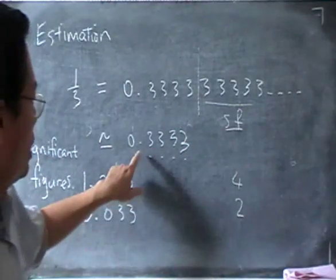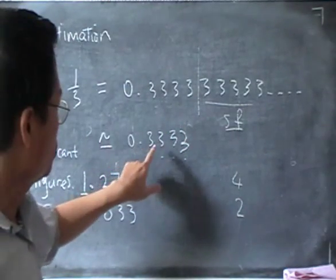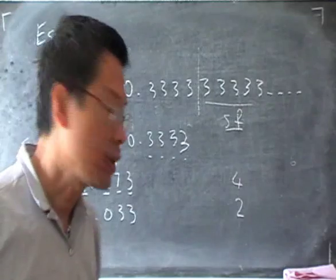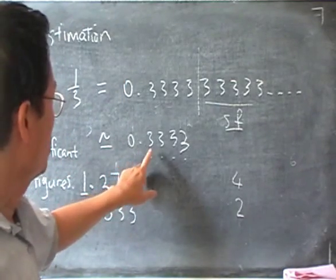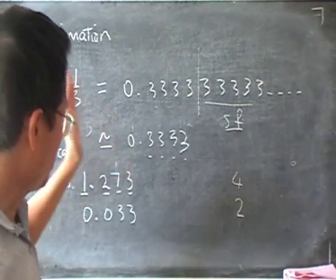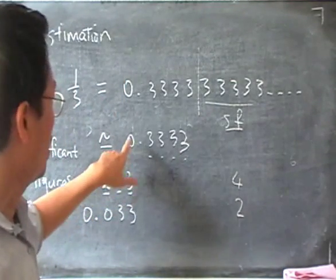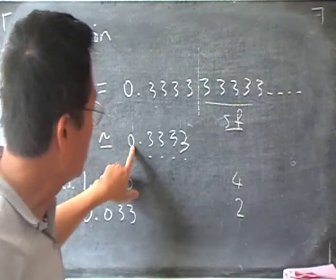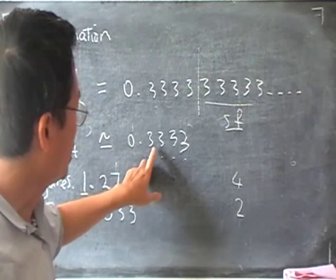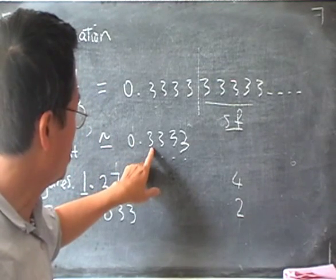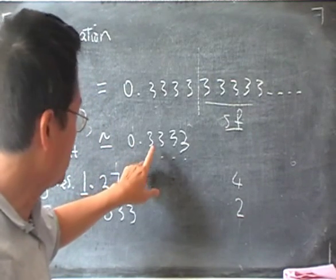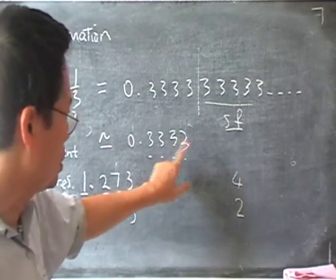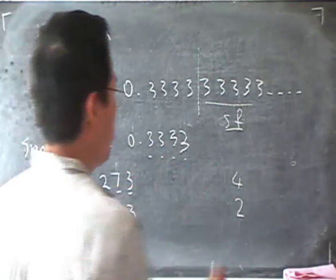So if I have 0.3333, I would start from the left, ignore the zero before the decimal, and then count the threes: 3, 3, 3, 3 — that's 4 significant figures.